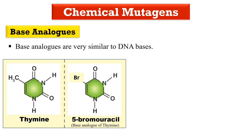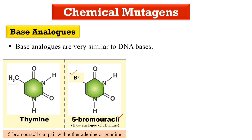For example, 5-bromouracil is the base analog of thymine. As you can see, the difference between their structures is simply that instead of the CH₃ group, 5-bromouracil has a bromine group attached. Due to this, it can behave like thymine and get inserted into DNA during replication. The property of 5-bromouracil is that it can base pair with either adenine or guanine. If it base pairs with guanine, there will be a mutation — guanine will appear instead of adenine — causing a mutation.